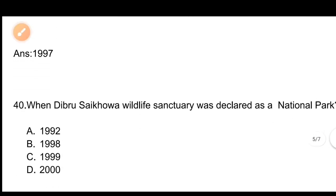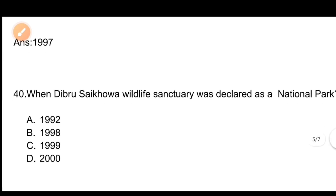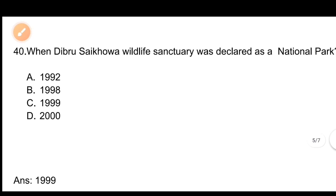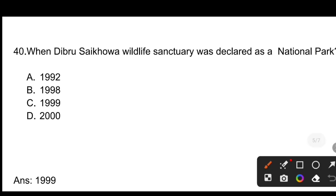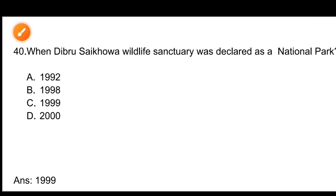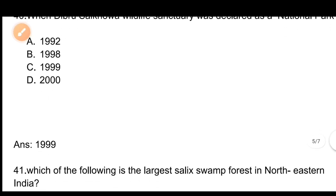Question number 40: When was Debru Saikowa Wildlife Sanctuary declared as a National Park? The correct answer is 1999. Debru Saikowa Wildlife Sanctuary was declared as a National Park in 1999.